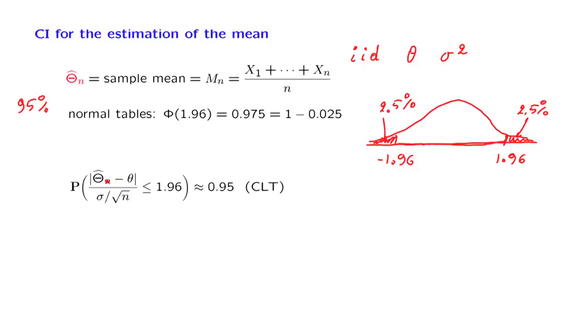If we take the sample mean, subtract the true mean, and then divide by the standard deviation of the sample mean, then we obtain a random variable which is approximately a standard normal. Therefore, what we have here is the probability of an approximately standard normal random variable, or actually its absolute value, falling below 1.96.